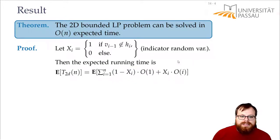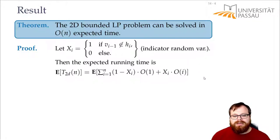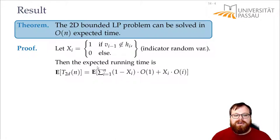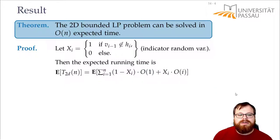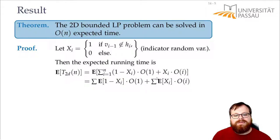We still want to simplify this. To do so we use the linearity of expectation, which says the expected value of a sum of random variables is the sum of the expected values of the random variables. That means we can pull out each part from the expected value. So we get the sum of the expected value of (1 − xi) times O(1), and the sum of the expected values of xi times O(i).